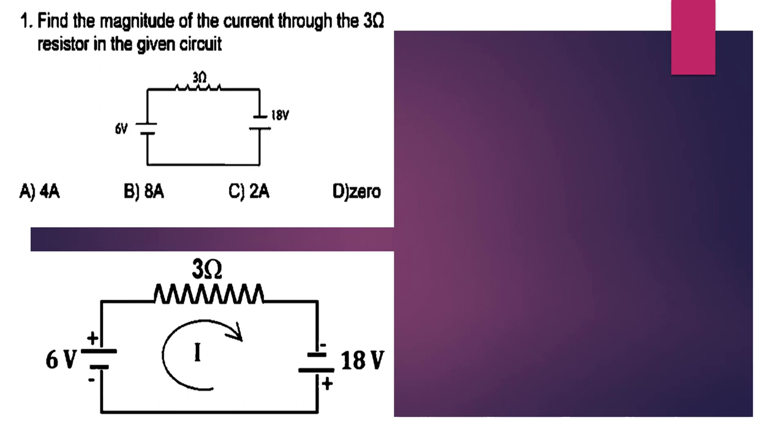Find the amount of current through the 3 ohm resistor in the given circuit. The current is in the 3 ohm resistor. There is a 6 volt source and an 18 volt source. The 18 volt is in the negative terminal.